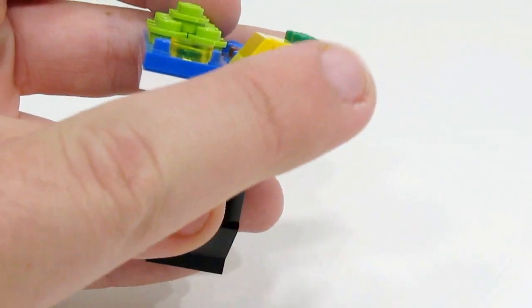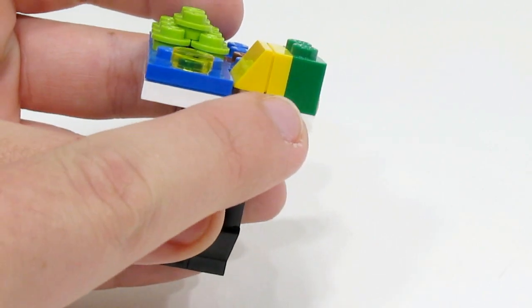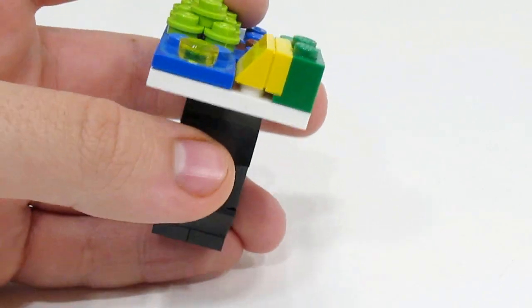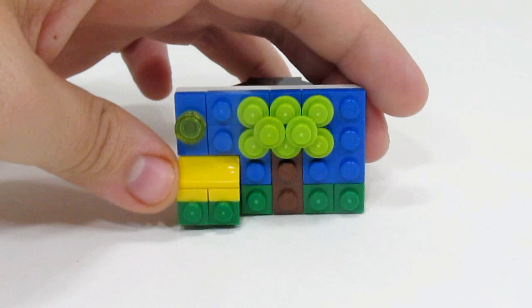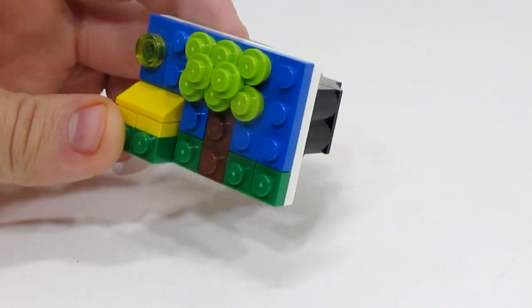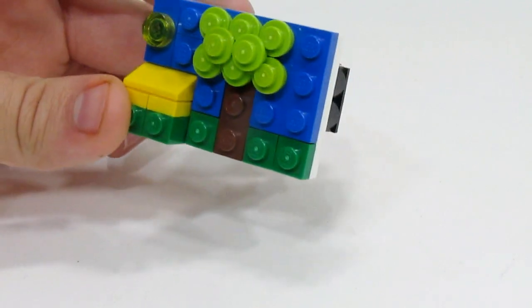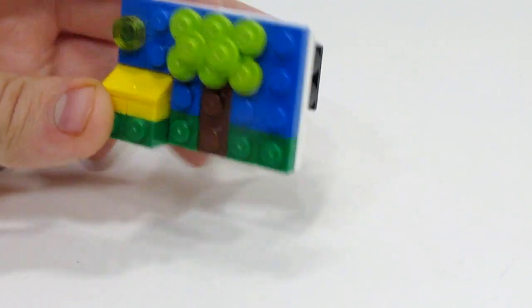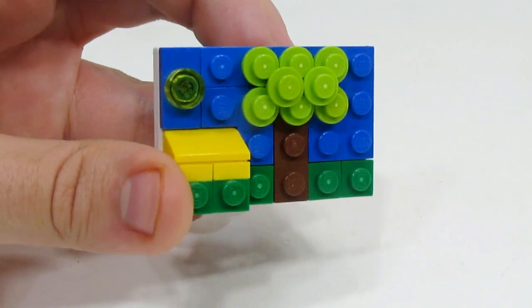You can tell right away what it's supposed to be—it's supposed to be a tent. The tree is also coming out at you, which I think is good. And there is also a sun right there. I didn't want to make it the same color yellow as the tent. You can see that's offset using a jumper plate.